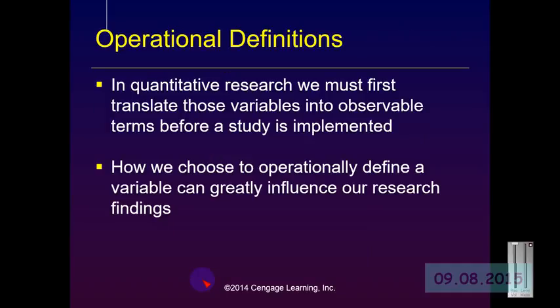When doing quantitative research, especially survey research, we want to carefully define what we mean by independent and dependent variables and translate those concepts into something that is observable. Because if we choose a definition for a variable that does not actually define the variable, our research findings can be influenced or invalidated.